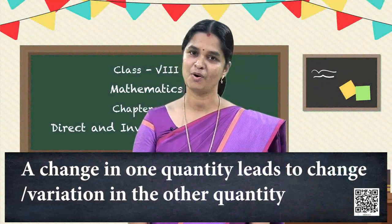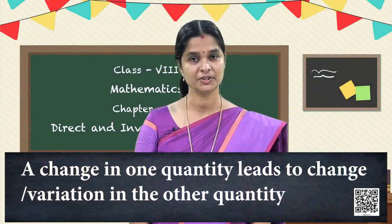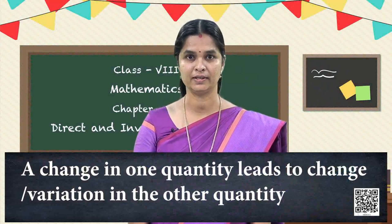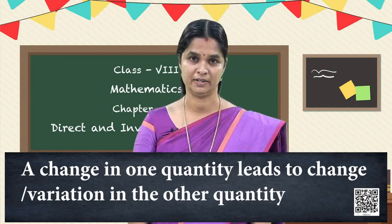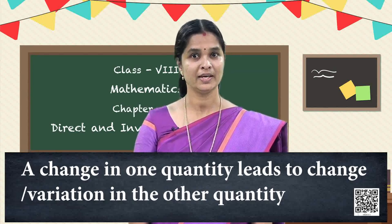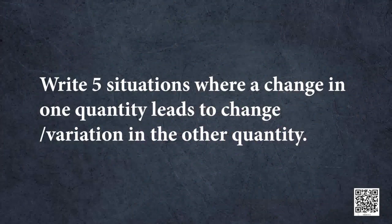So in all these examples, we have seen that a change or variation in one quantity leads to a change or variation in the other quantity. Here is a task for you: write five more such situations where a change in one quantity leads to a change or variation in the other quantity.